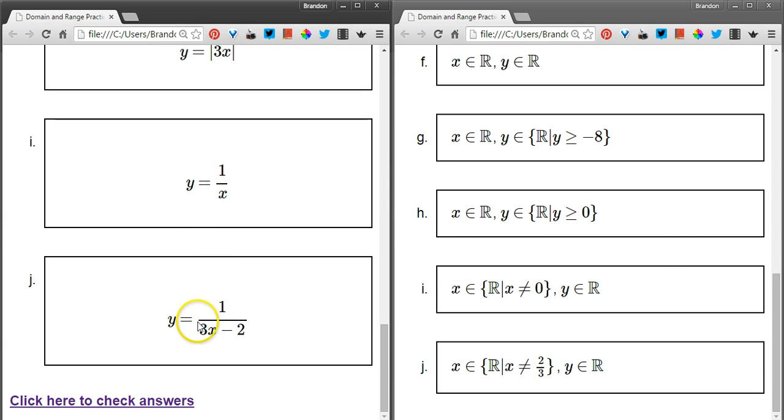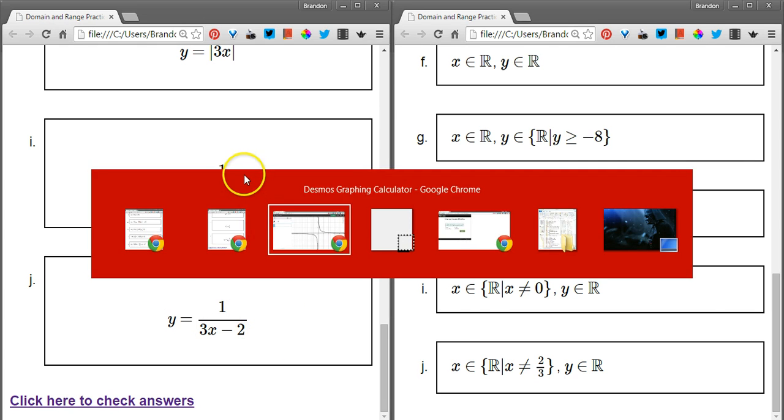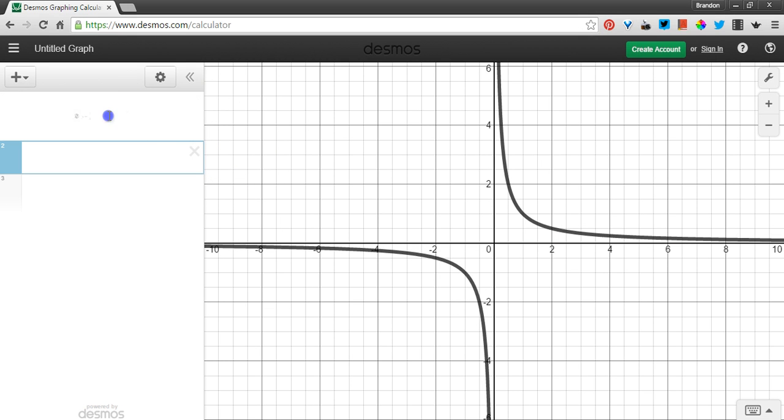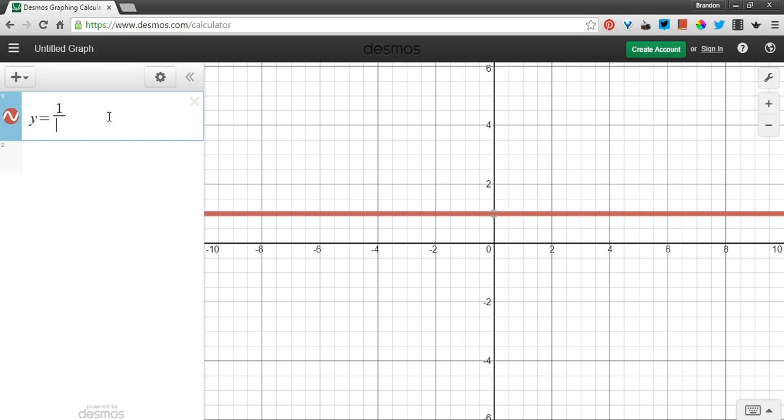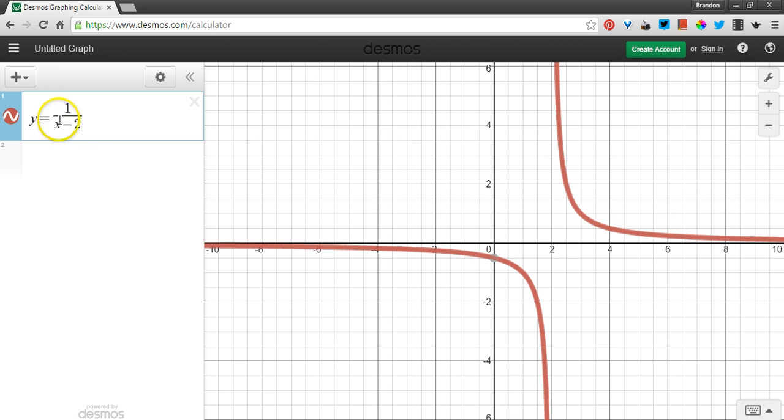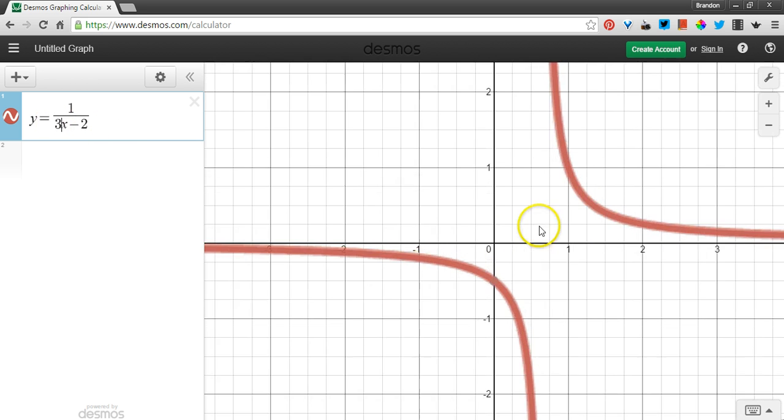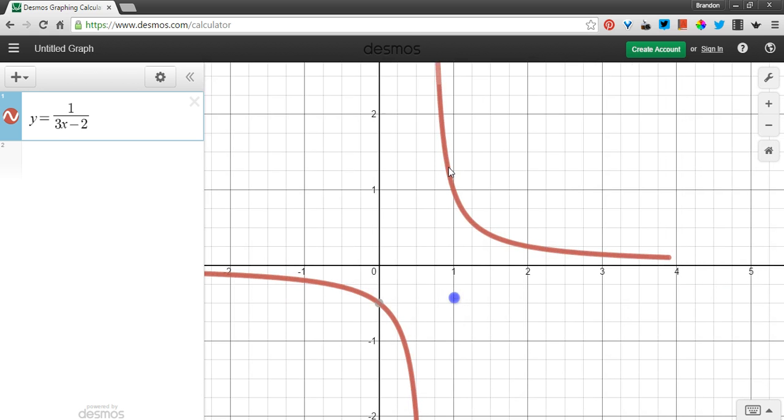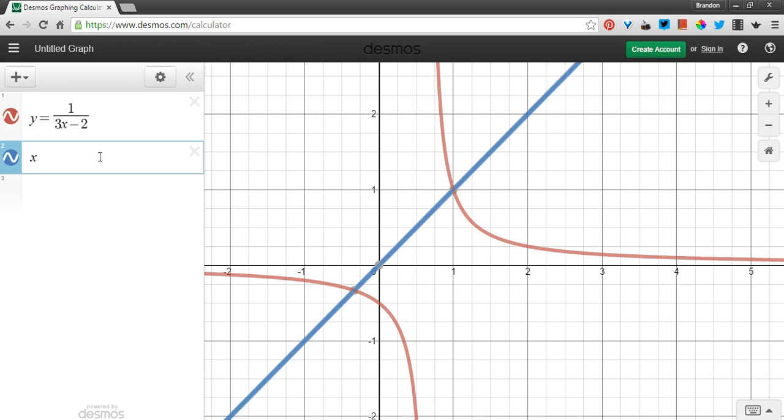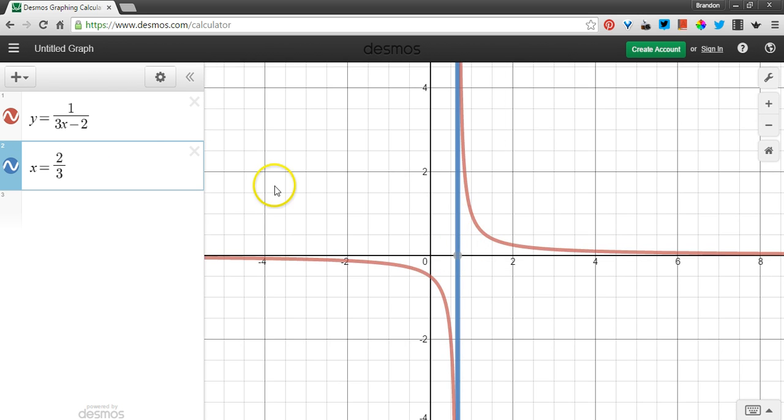I'm going to have the same problem in the next question here, actually. Let's go and look at that one. 1 over 3x minus 2. So, y equals 1 over 3x minus 2. Same kind of thing here. I've got a spot where I can't hit this value. And that spot is at x equals 2 thirds.